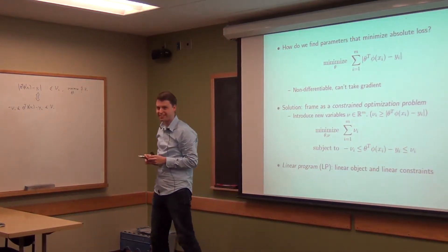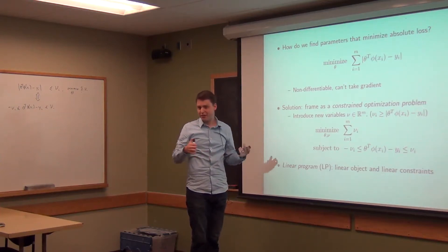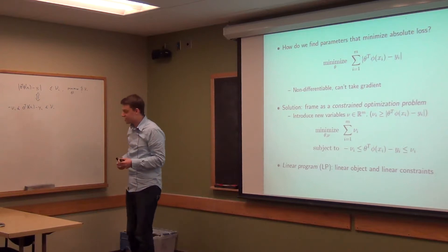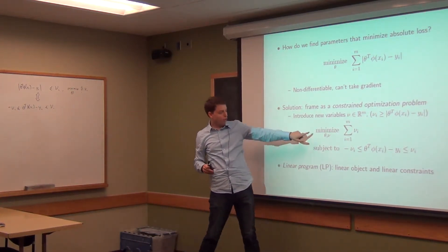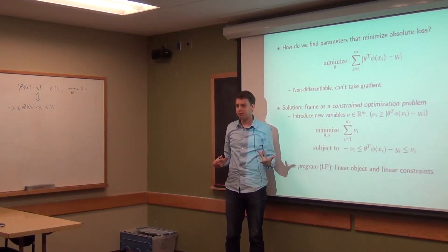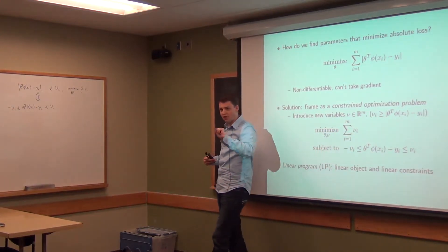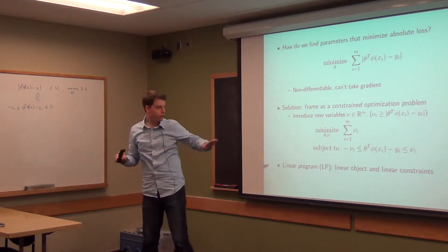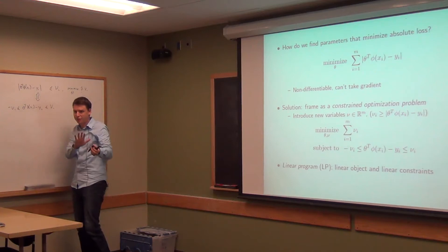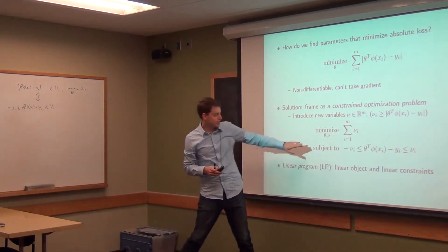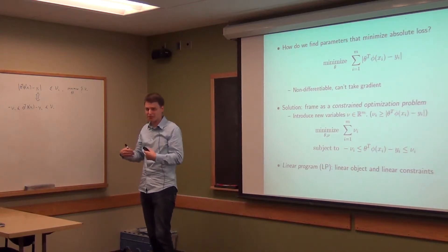It takes a few steps to get here, and this is why for a long time these were the domain of people who knew about linear programming. But now that's becoming less and less true. What we get at the end is a linear program — an optimization problem where the objective and all the constraints are linear functions of the variables. The nu's here are slack variables: they essentially provide some slack as an upper bound; they can be bigger but never less than the absolute value. We're introducing these new variables and minimizing the slack. The nice thing about linear programs is that they are convex programs, so we can solve them using off-the-shelf tools.